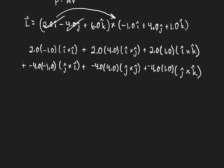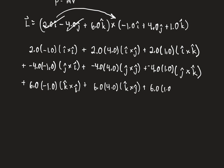And last, the k̂ row: plus 6.0 times −1.0 with k̂ cross î; plus 6.0 times 4.0 with k̂ cross ĵ; plus 6.0 times 1.0 with k̂ cross k̂. Any vector crossed with itself is zero, so the diagonal terms — î×î, ĵ×ĵ, k̂×k̂ — all cancel out.